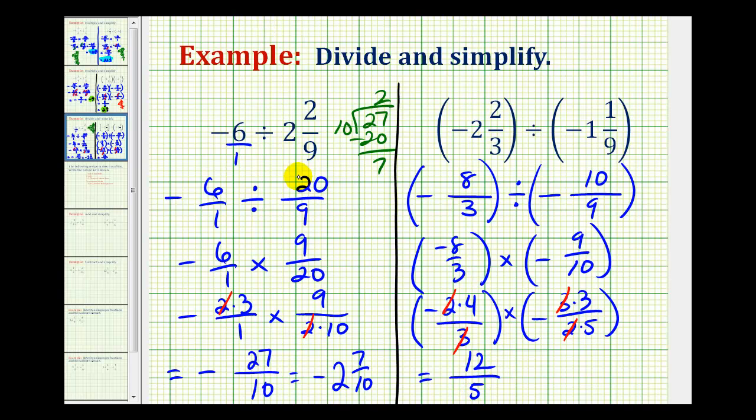So to convert this to a mixed number, we would divide 12 by five. Well, there's two fives in 12, with the remainder of two. So 12 fifths is equal to two and two fifths.